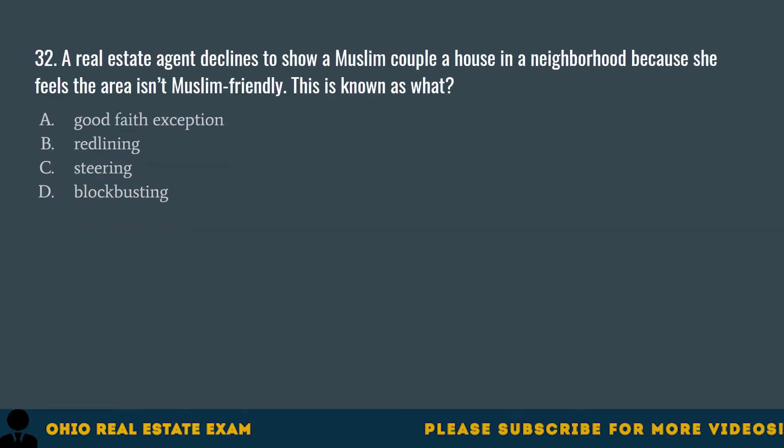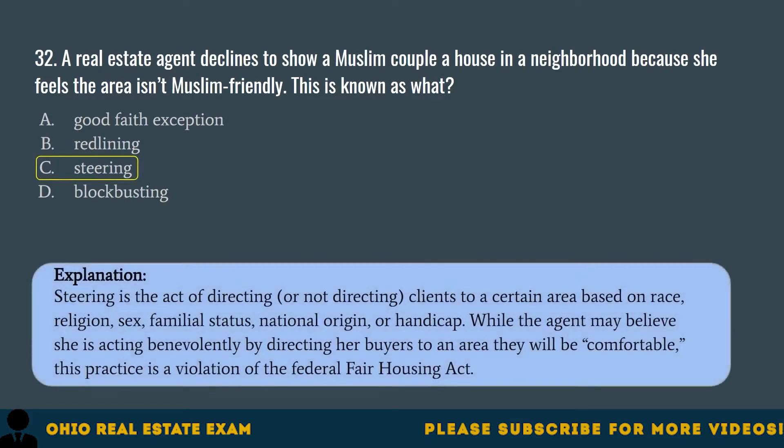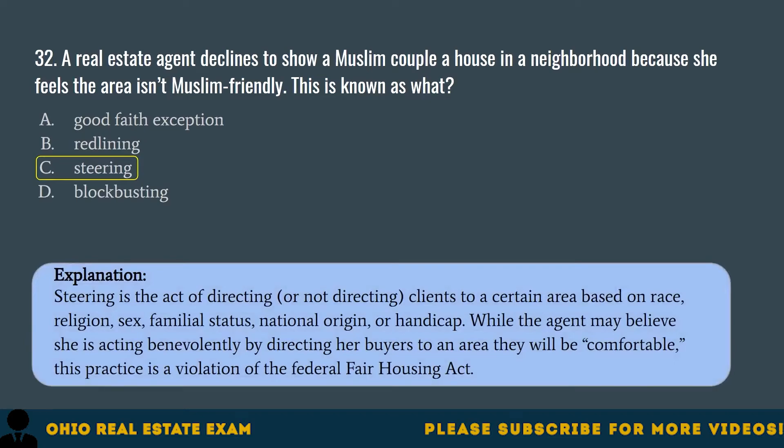Question 32. A real estate agent declines to show a Muslim couple a house in a neighborhood because she feels the area isn't Muslim-friendly. This is known as what? A. Good Faith Exception. B. Redlining. C. Steering. D. Blockbusting. The correct answer is C. Steering. Steering is the act of directing or not directing clients to a certain area based on race, religion, sex, familial status, national origin, or handicap. While the agent may believe she is acting benevolently, this practice is a violation of the Federal Fair Housing Act.